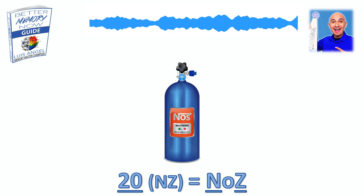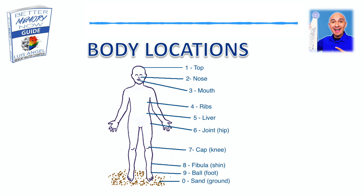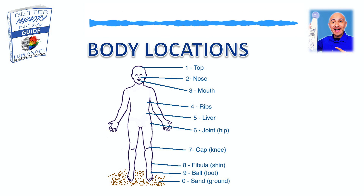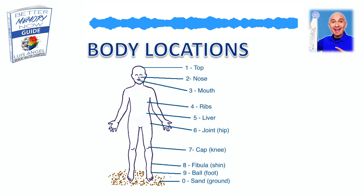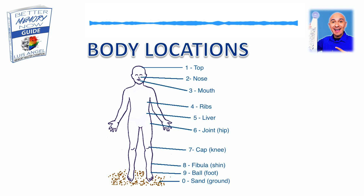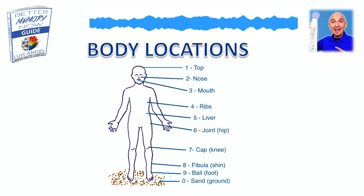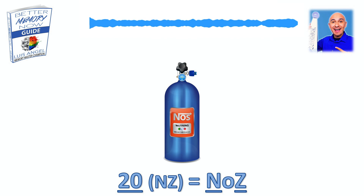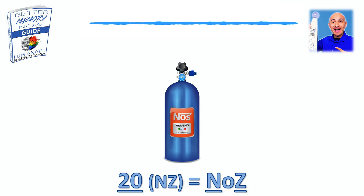The reason why we associate these to our body locations is for easy retrieval — kind of like a crutch. If you're struggling with calling out these numbers, you just link it to that body location, and that's going to act as a crutch so you can recall it easier in the future. And pretty soon, you're not going to need these crutches. You're just going to know that 20 is Noz.